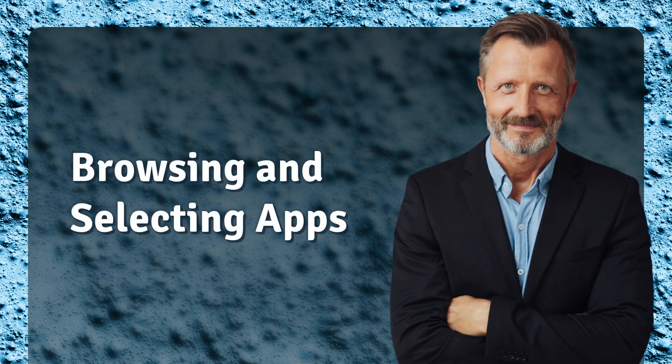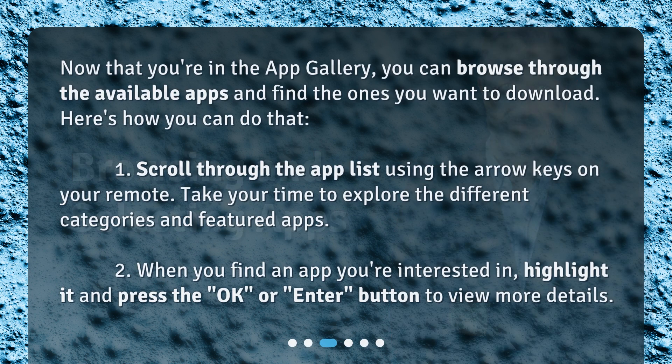Browsing and selecting apps. Now that you're in the App Gallery, you can browse through the available apps and find the ones you want to download. Here's how you can do that. 1. Scroll through the app list using the arrow keys on your remote. Take your time to explore the different categories and featured apps.